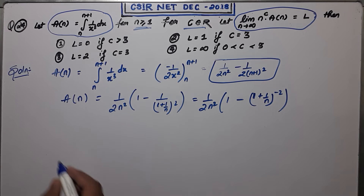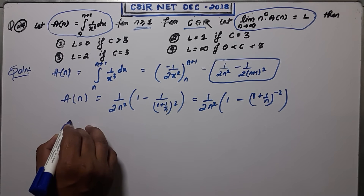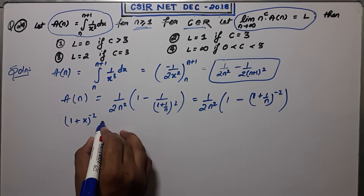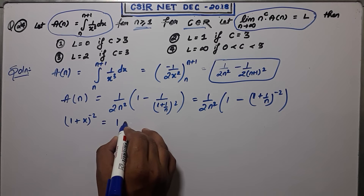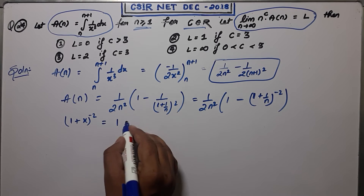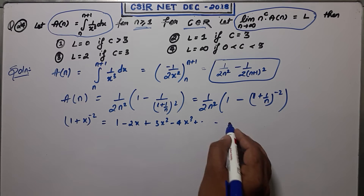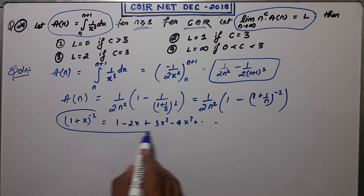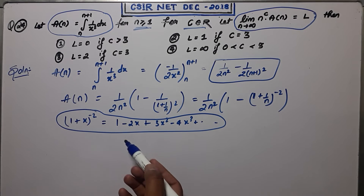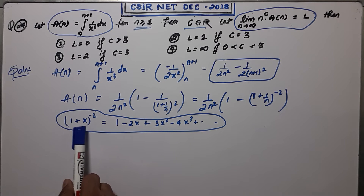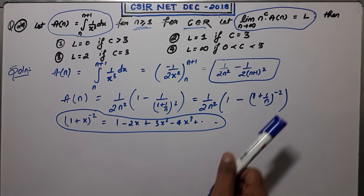Remember this expansion: (1+x)^(-2) = 1 - 2x + 3x² - 4x³ + ... when |x| < 1. You must remember this expansion before solving this question, otherwise you can't solve it. Here x = 1/n, and since n > 1, we have |x| < 1, so the expansion is valid.